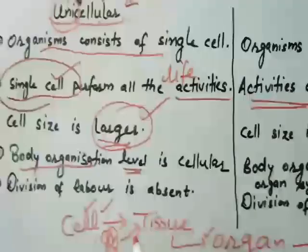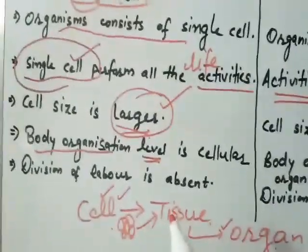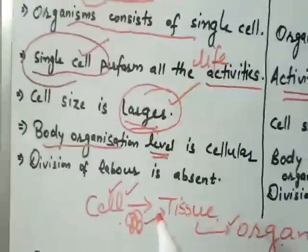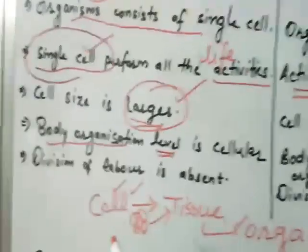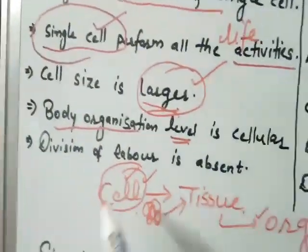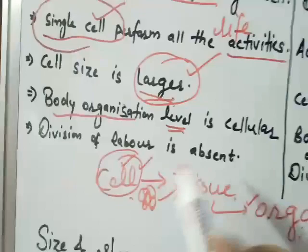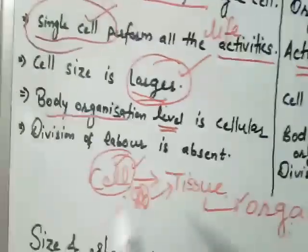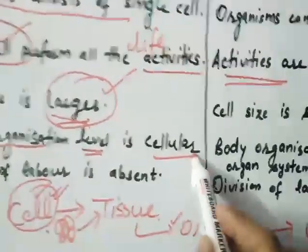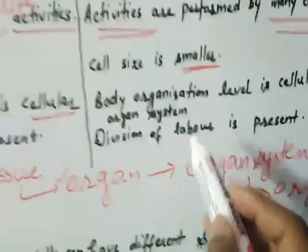Now, if it is a unicellular organism with only one cell, then what will be its body organization? It will be at the cellular level only — just the cell, since there are no higher groupings possible.